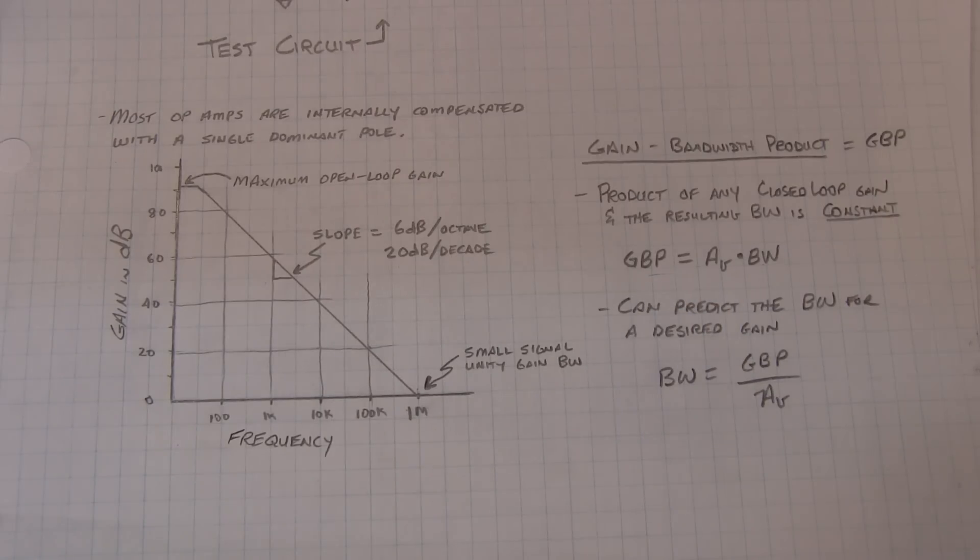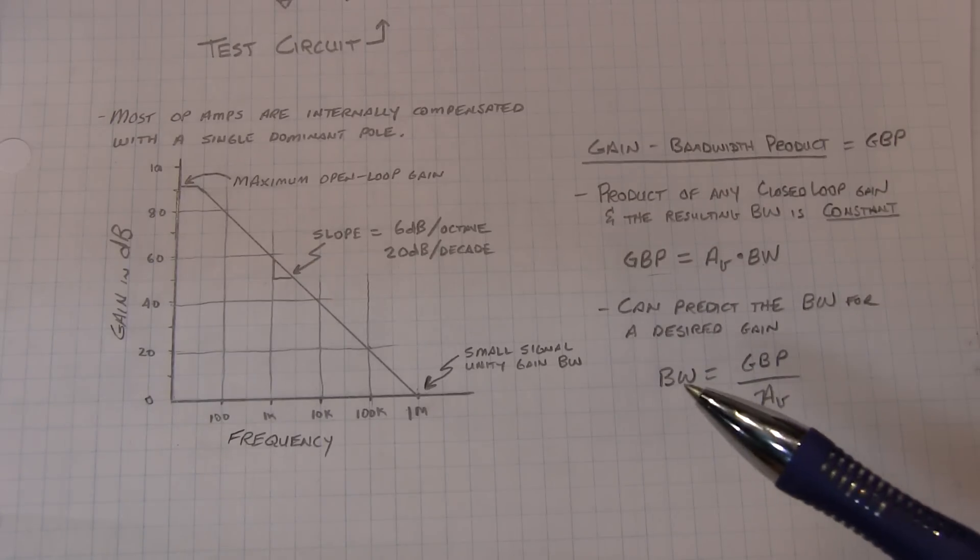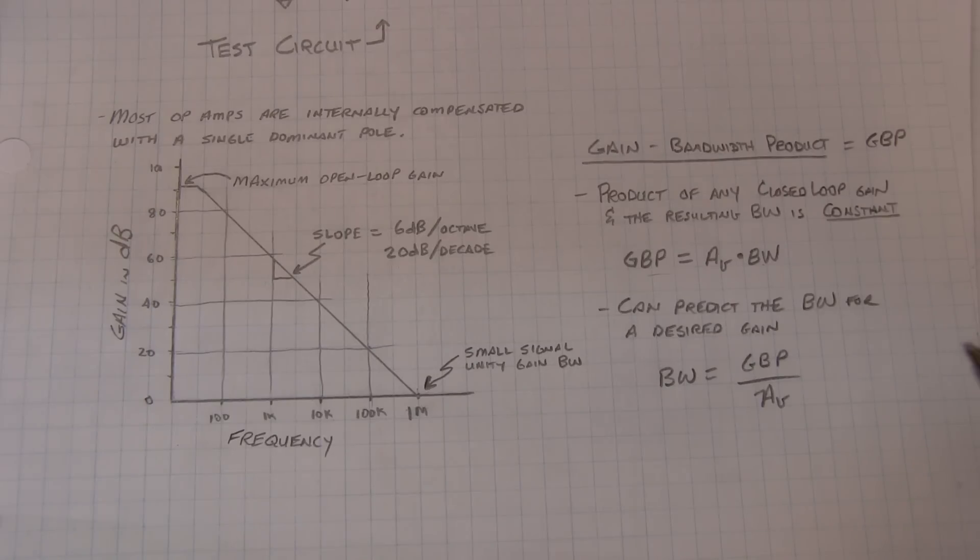The nice thing about that is, using it the other way around, let's say you need an op amp circuit that has a gain of a particular value, you can predict what the bandwidth will be by taking the gain bandwidth product divided by that gain you're going to use. That will essentially tell you the bandwidth.